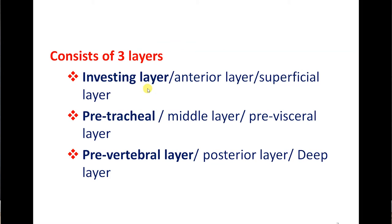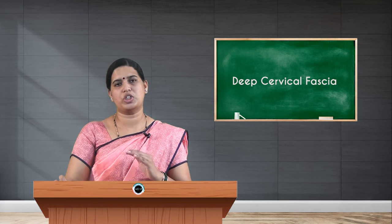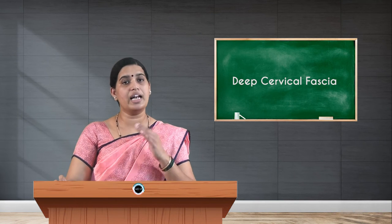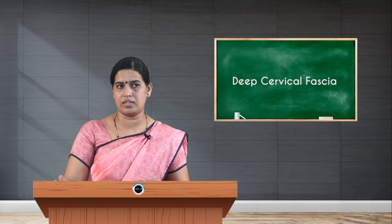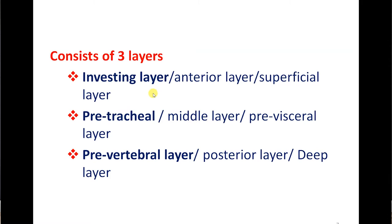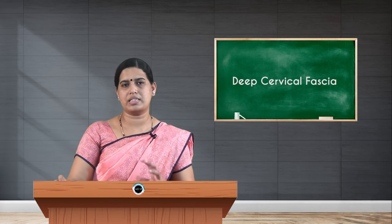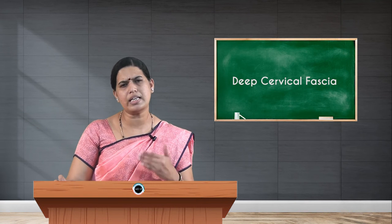The investing layer will be covered in detail regarding its attachments and the muscles and glands it splits and encloses. The pre-tracheal layer, as the name indicates, lies in front of the trachea and splits and encloses the thyroid gland. The pre-vertebral layer lies in front of the vertebral column and covers the pre-vertebral muscles — the scalene muscles (scalenus anterior, medius, posterior) and the levator scapulae.